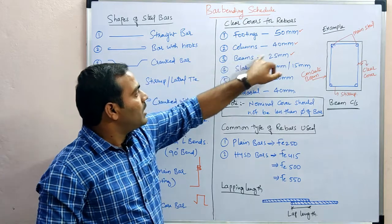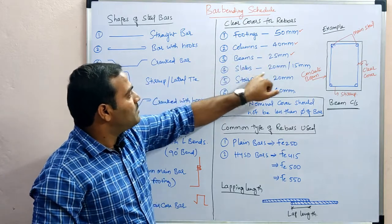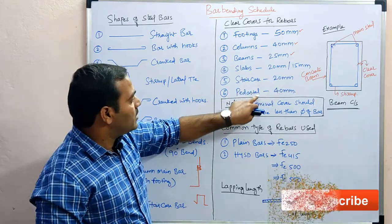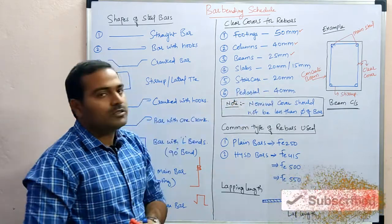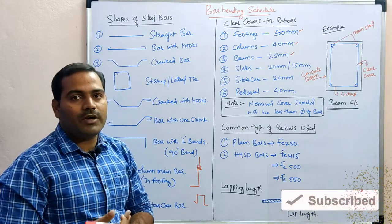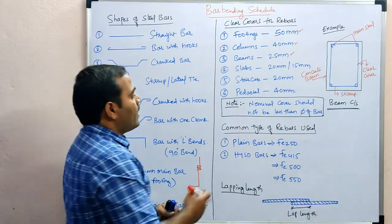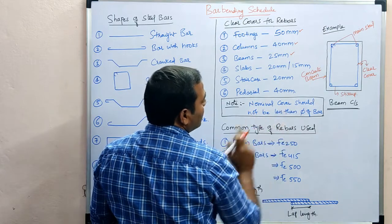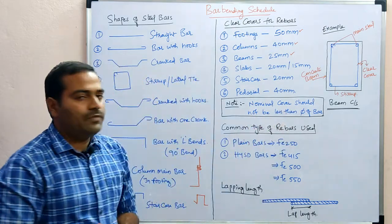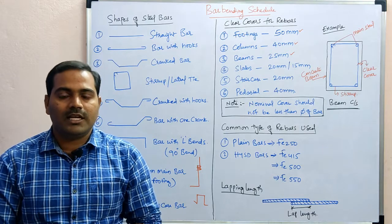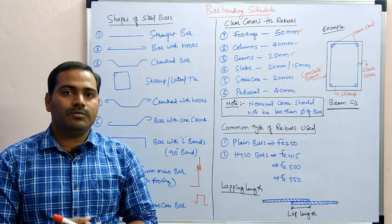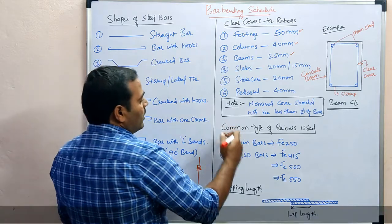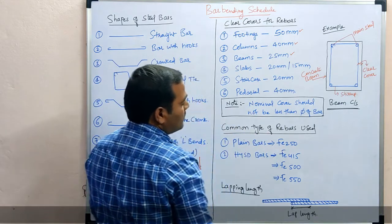For columns the clear cover is 40 mm, for beams 25 mm, for slabs 20 mm or 15 mm, for staircases 20 mm, and for pedestals 40 mm. Note that the nominal cover should not be less than the diameter of the bar — so if the bar diameter is 16 mm, the minimum cover must be more than 16 mm.